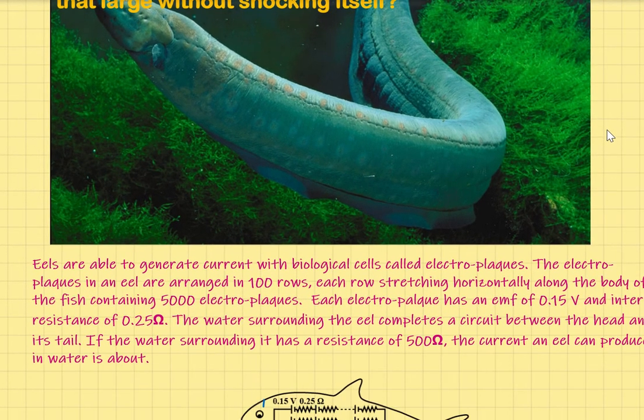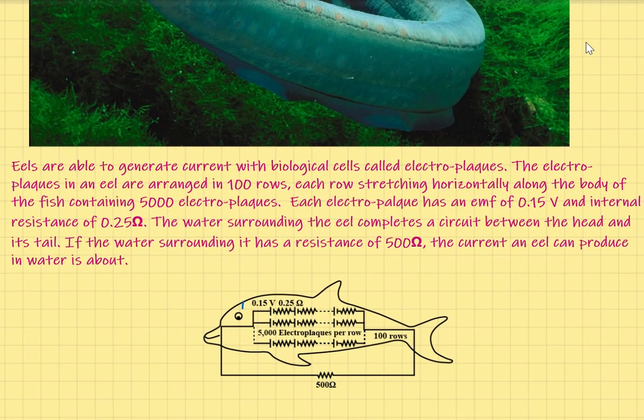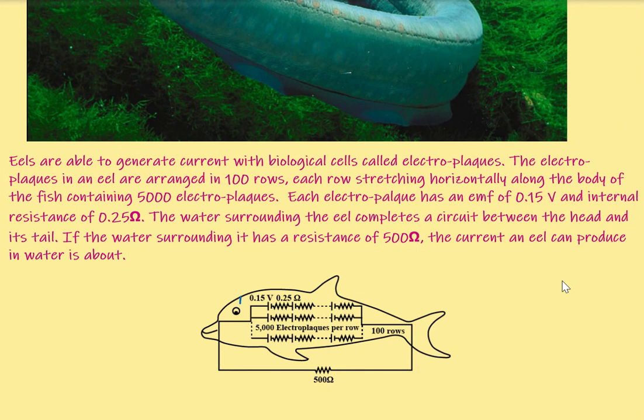To calculate how much current it produces, let's take an example. Eelfish generates current with biological cells called electroplaques. Each one has an EMF of 0.15V and its internal resistance is 0.25Ω.